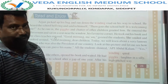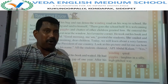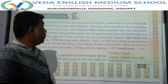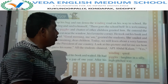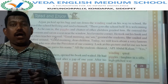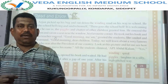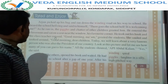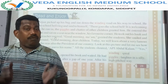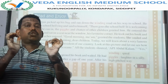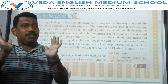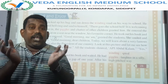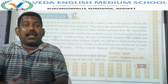Who is the name of the boy? Arjun. What did he do? He picked up his bag and ran down the winding road on his way to school. Winding road means a road which has many curves. When he was coming to school, what did he hear? He heard the school bell. When he heard the school bell ring, he said to himself that the school bell is welcoming him.